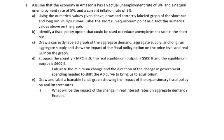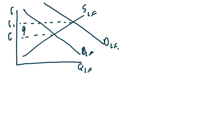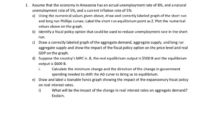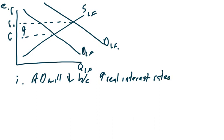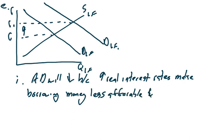The last question is: what will be the impact of the change in real interest rates on aggregate demand? Explain. Because real interest rates went up, aggregate demand will decrease, because higher real interest rates make borrowing money less affordable, and gross business investment and consumer spending will both decrease, shifting aggregate demand to the left.